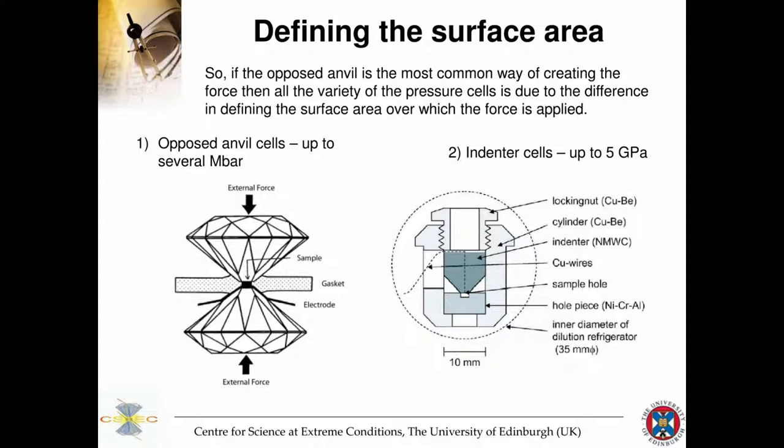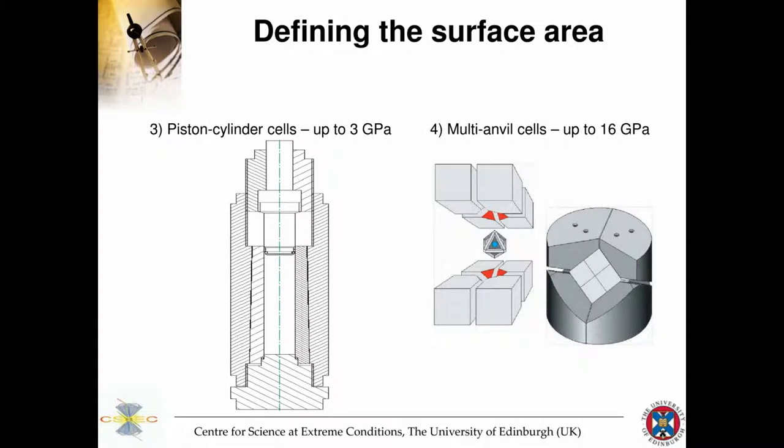In terms of defining the surface area, the classic example is opposed anvil cells, which can work up to several megabars. These consist of two diamonds with a sample in between, supported by a gasket. You can have hybrid designs such as indenter cells — where a conical plug with electrical feedthrough presses into an inner piece containing the sample, and by compressing and deforming that piece you create pressure. Indenter cells were precursors of the diamond anvil cell; earlier designs used one diamond polished to a semicircle or needle pressing on a larger diamond, creating asymmetric indenter-type cells.